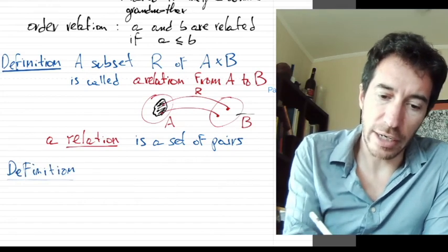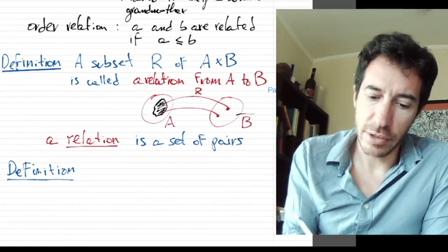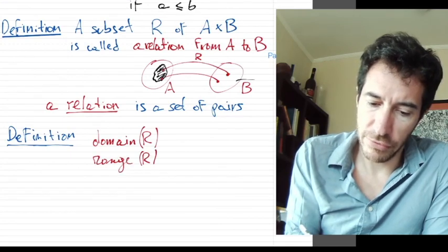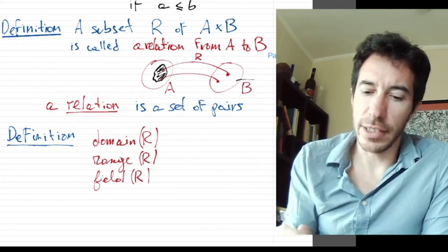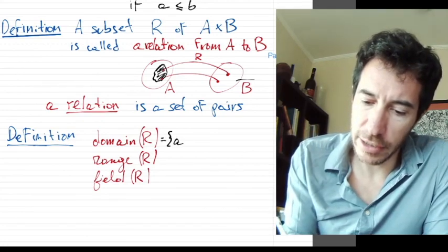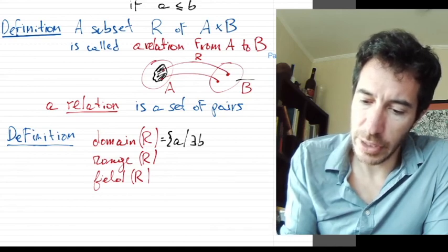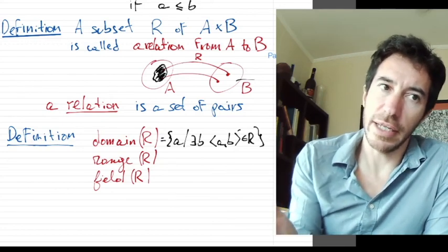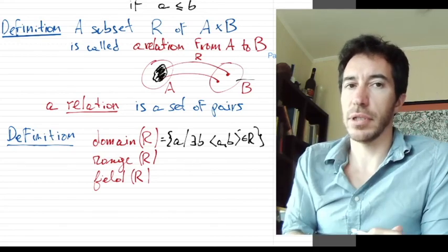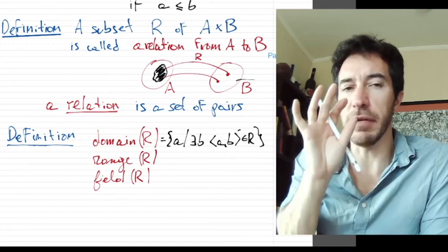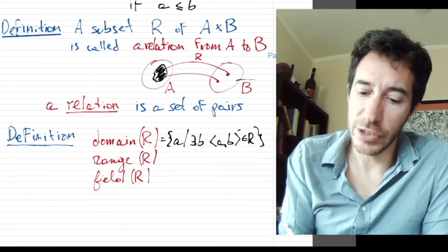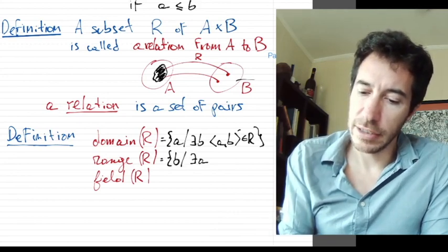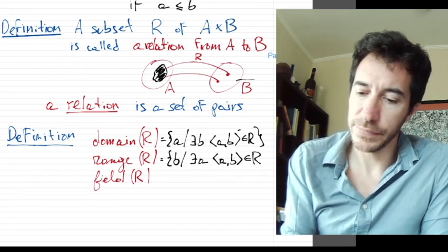Definition. Suppose we are given a relation R, and we want to define the domain of R, range of R, and the field of R. The domain of R is the set of all the A's such that there exists a B such that the pair (A,B) belongs to R. Everything that is associated to something. Everything that is the first coordinate of somebody in the relation. And the range is everything that is the second coordinate, the set of all the B's such that there exists an A such that (A,B) belongs to R.